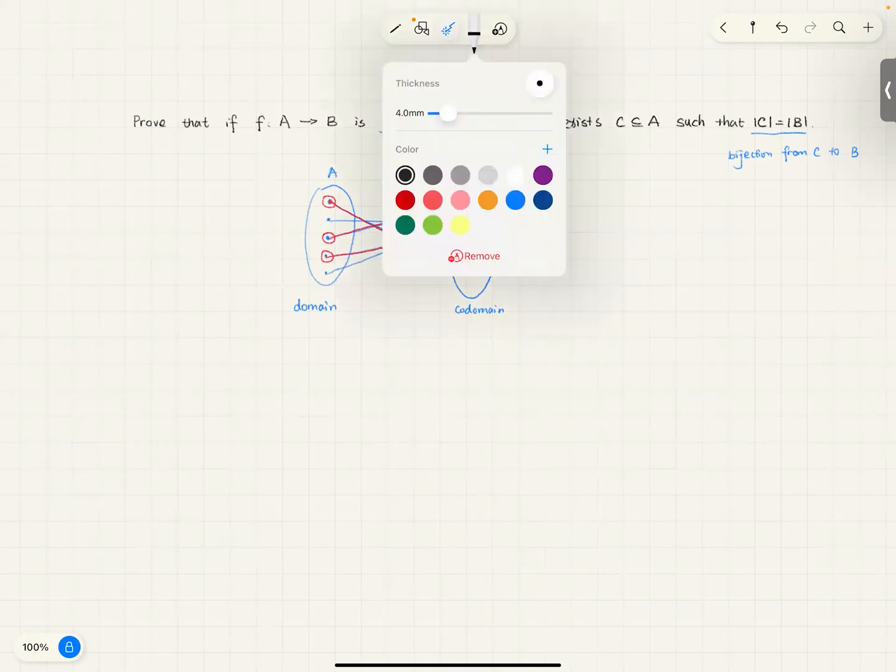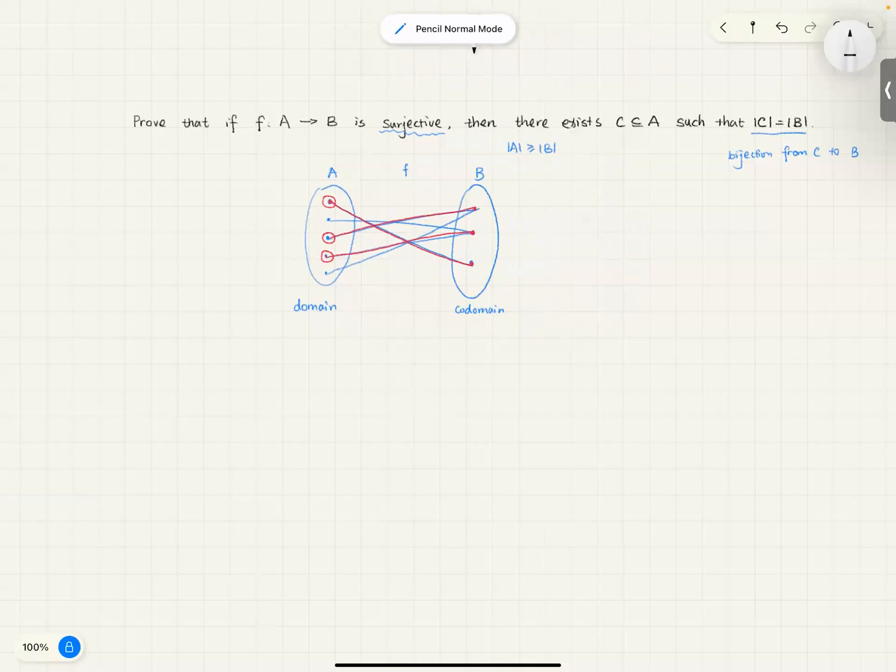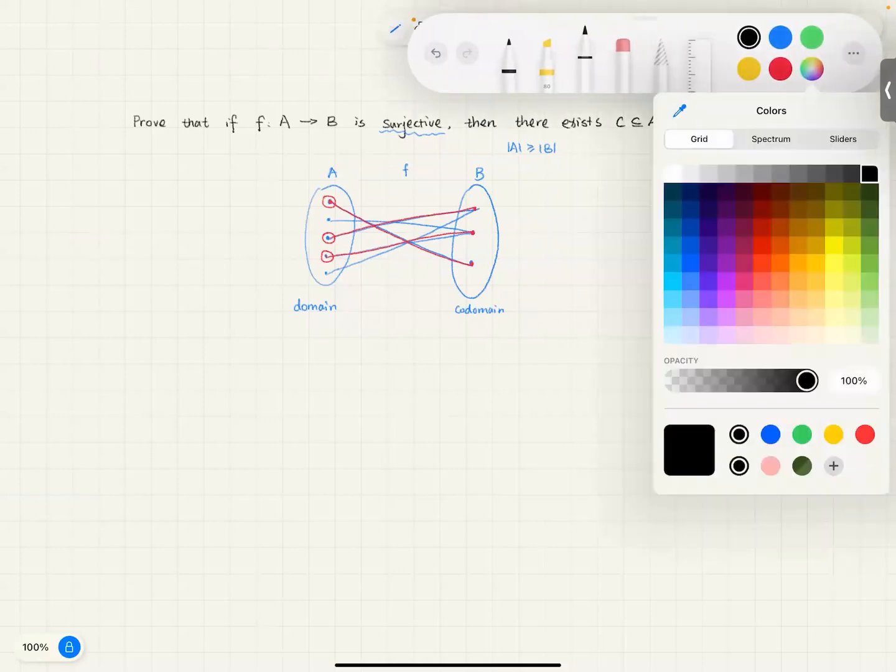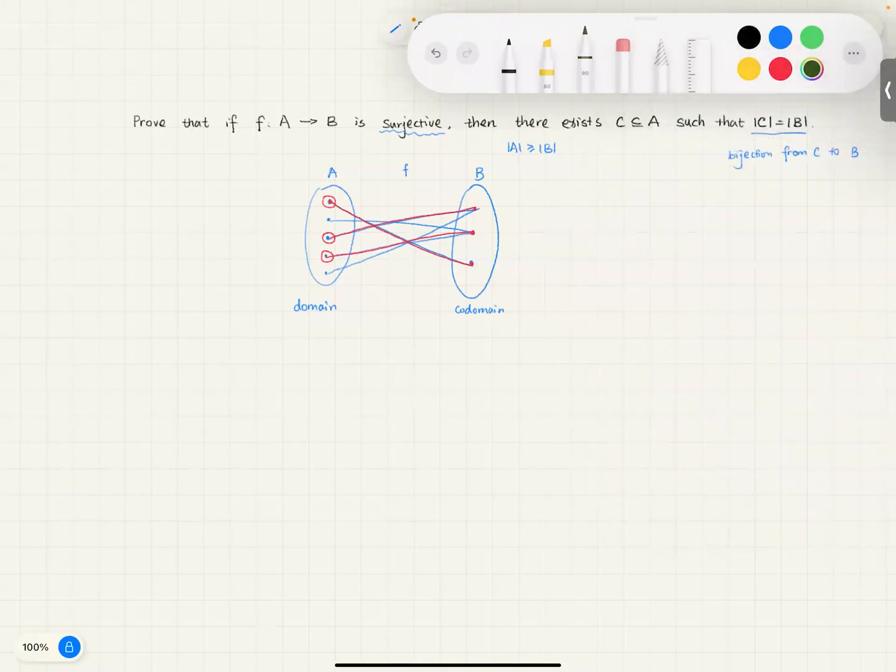So, now we can start writing our proof down. Let's use a different color. Since it's bijective, I can always pick. For every element here, there is always something mapped to us. So, let's use that property.